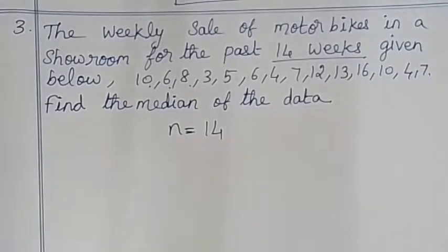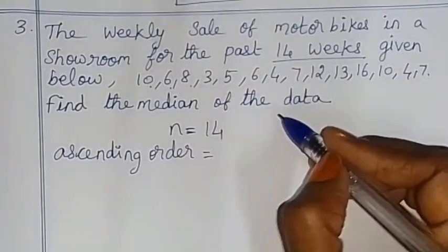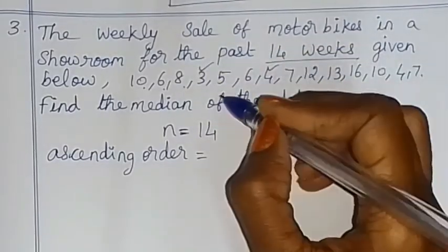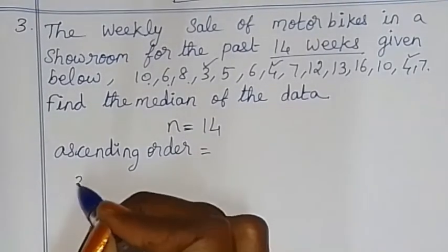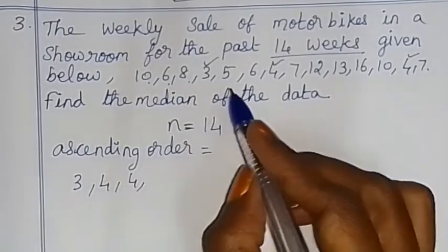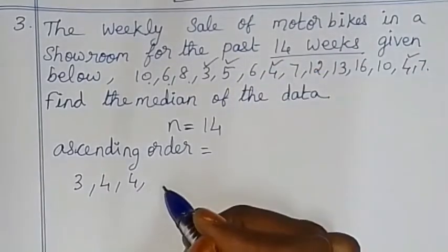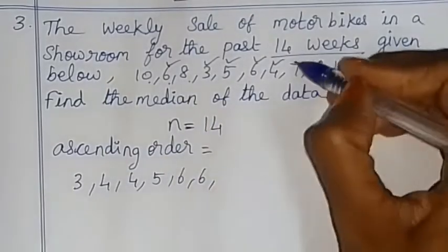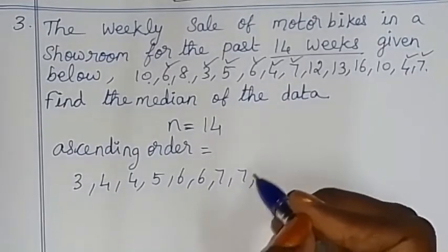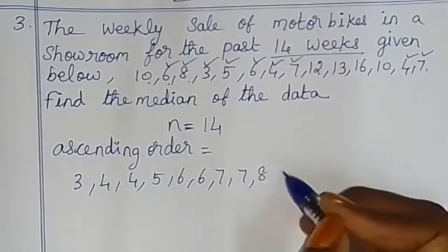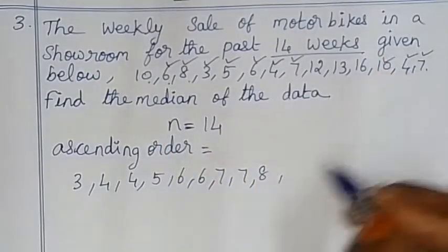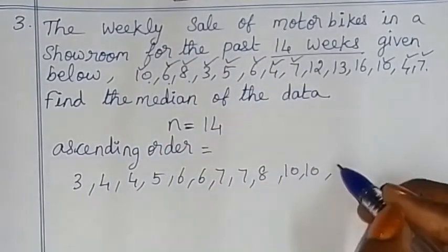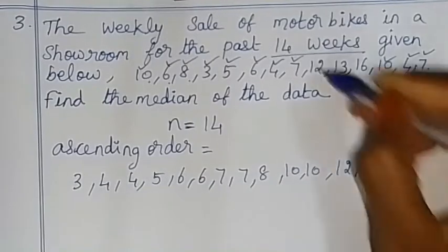First, we arrange in ascending order — small to big. The smallest numbers arranged: 3, 4, 4, 5, 6, 7, 7, 8, 9, 10, 10, 10, 12, 13, 16. All 14 data are now arranged.